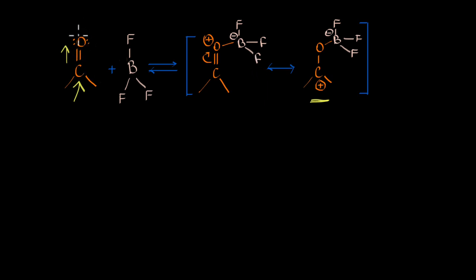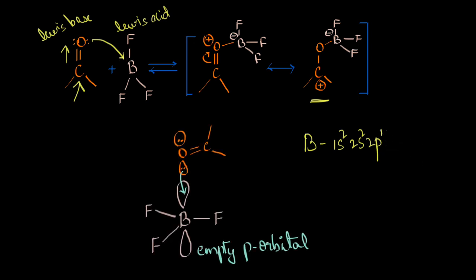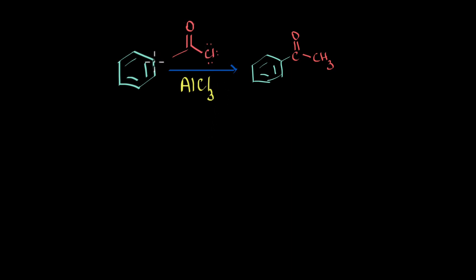The lone pair of electrons on the oxygen atom acts as a Lewis base, and BF3 is our Lewis acid. In a Lewis acid-base reaction, the lone pairs go into the electron-deficient boron atom. The electronic configuration of boron is 1s² 2s² 2p¹ — there is only one electron in the p orbital, so there are still empty p orbitals available. That is exactly where the lone pair goes. The empty p orbital gets filled, boron finally gets a complete octet, and carbon ends up with a more positive charge.